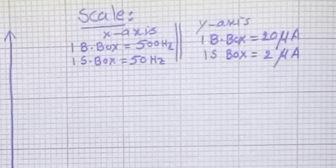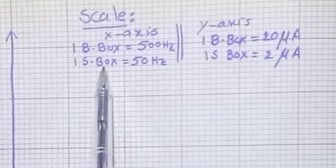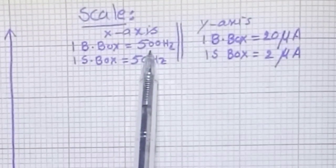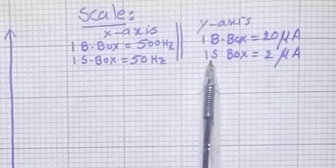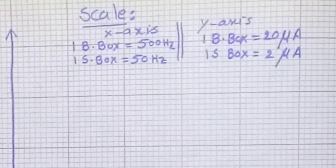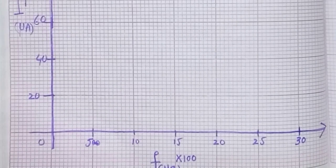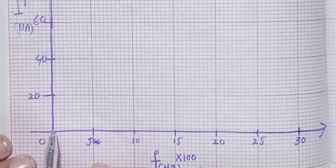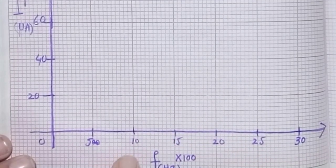Now let's set the scale. Along the x-axis, one big box equals 500 Hz, and one small box equals 50 Hz. Along the y-axis, one big box is 20 microamperes and one small box is 2 microamperes. Now let's plot our points. For 1000 Hz on the x-axis, we move 20 big boxes — this 10 and again 10 makes 20 — representing 1000 Hz frequency.